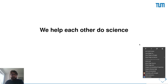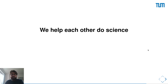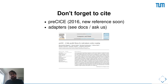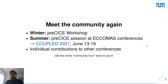We essentially help each other — developers and users — to do science, and it is important that we collaborate early on. This means drafting proposals together, writing and reviewing publications together, and offering courses together. As an academic project, Precise relies a lot on publications, so please cite the reference paper and look for the new version coming soon, and also cite the adapters. Hopefully we will continue meeting every year — a Precise workshop in winter and an invited session at a thematic conference in summer, such as the coupled problems conference in June.